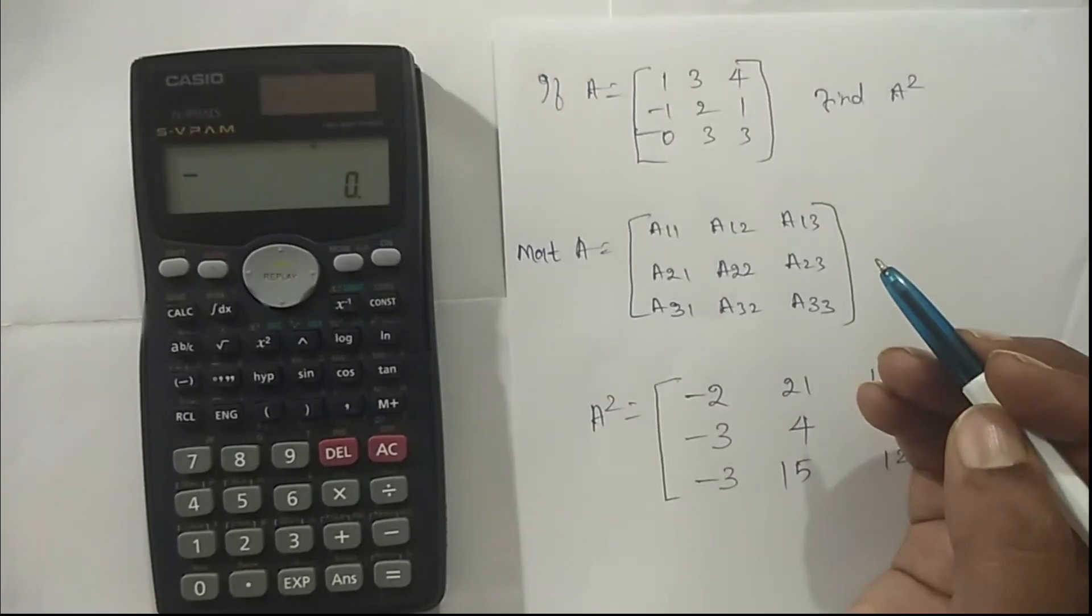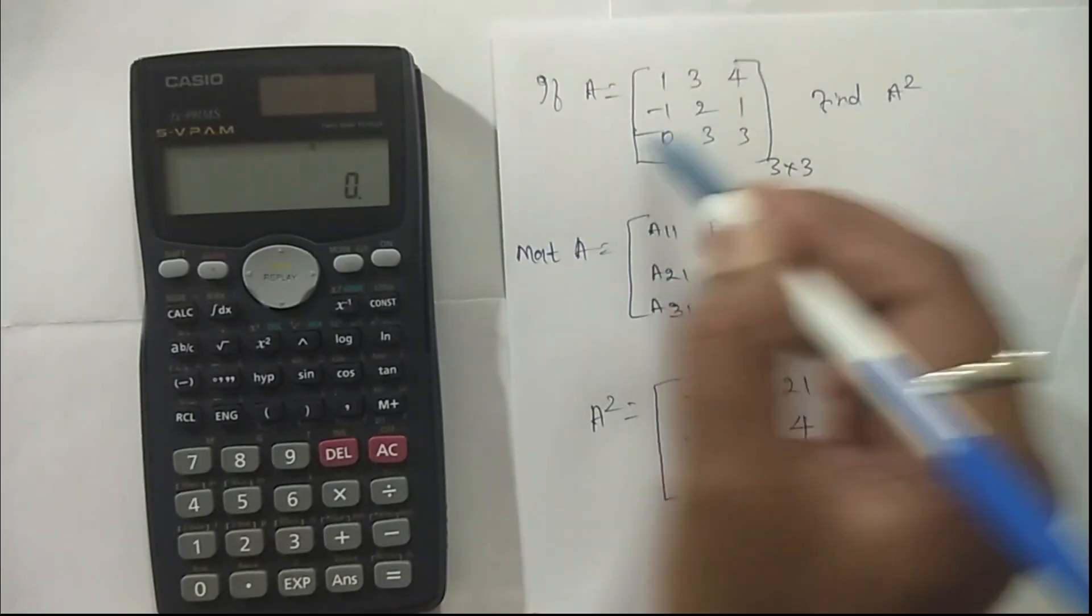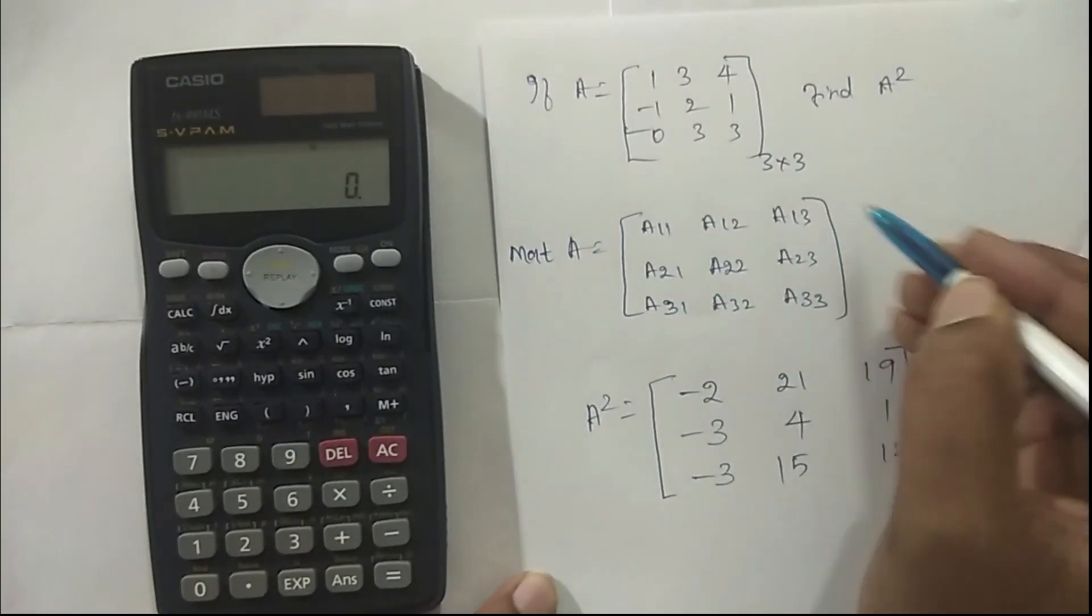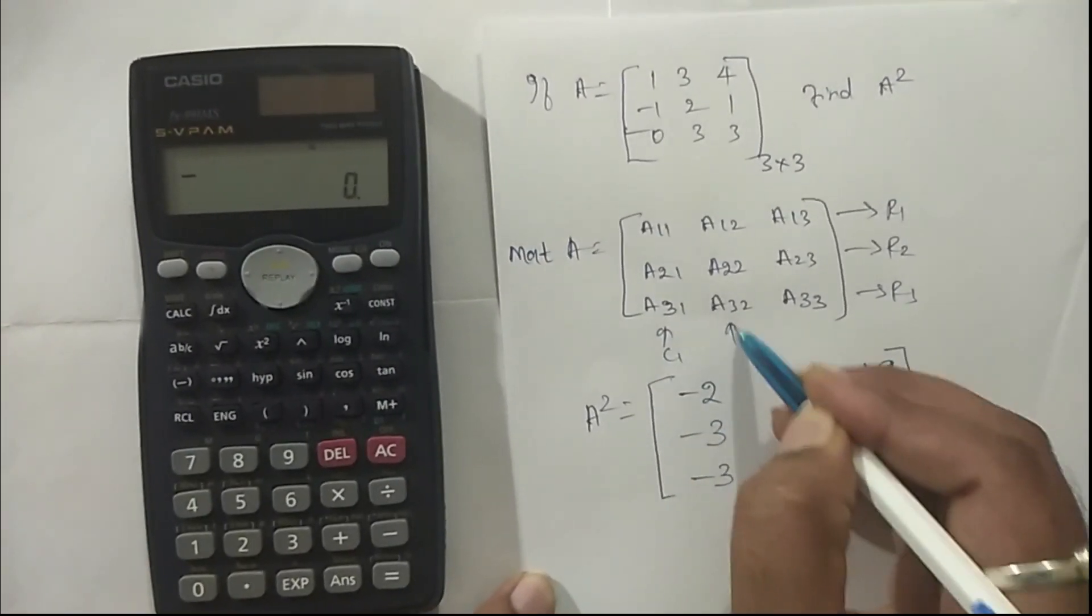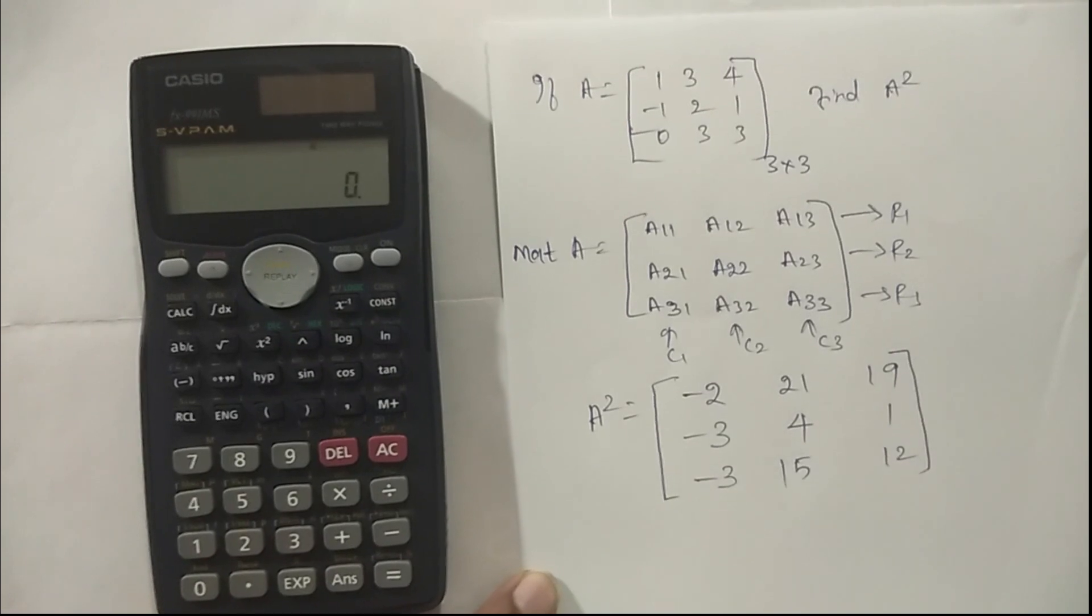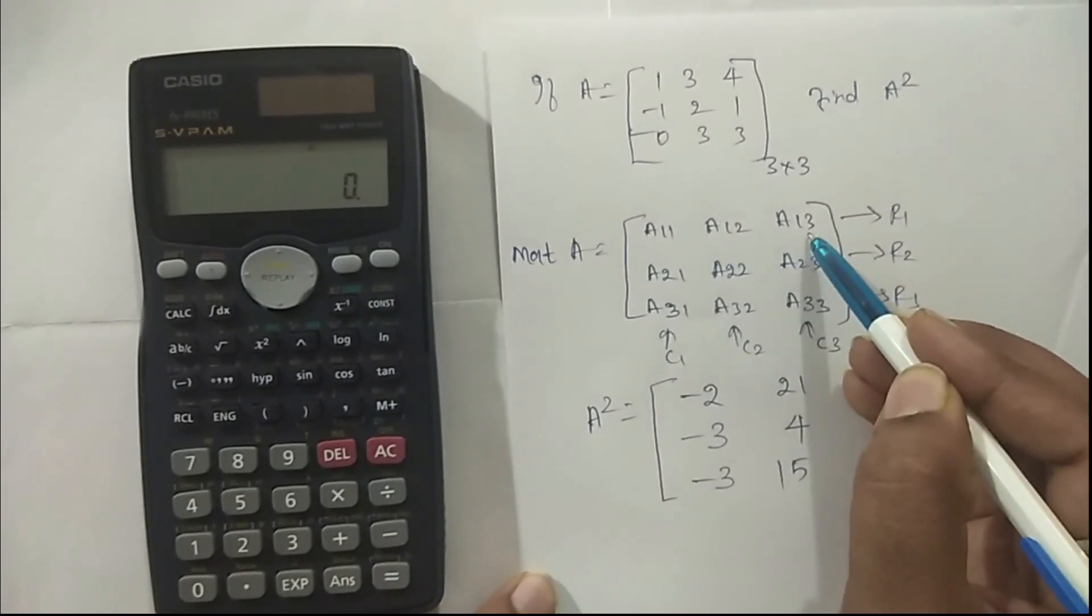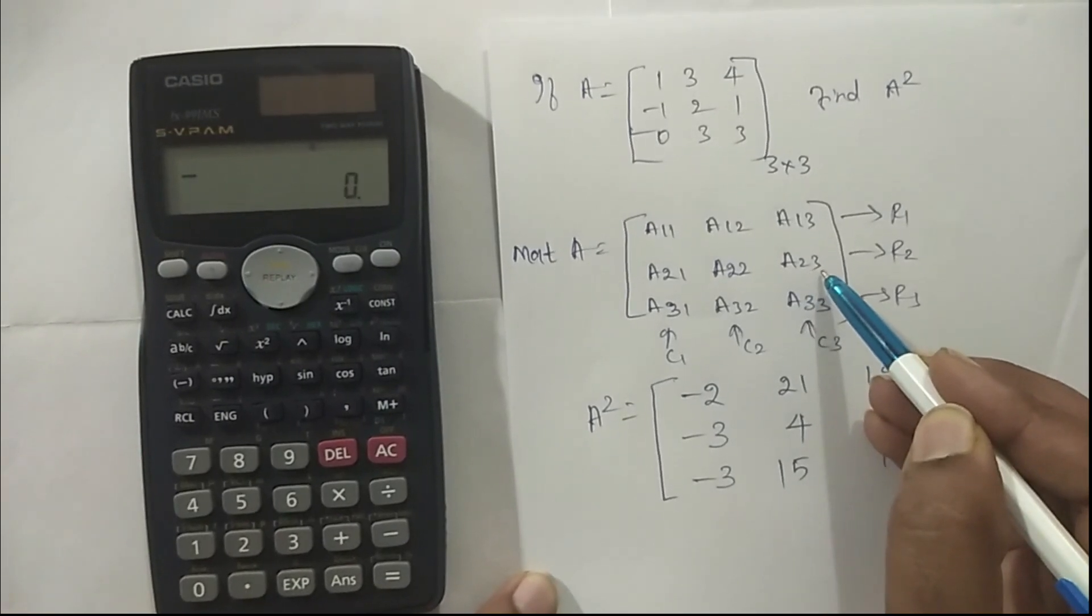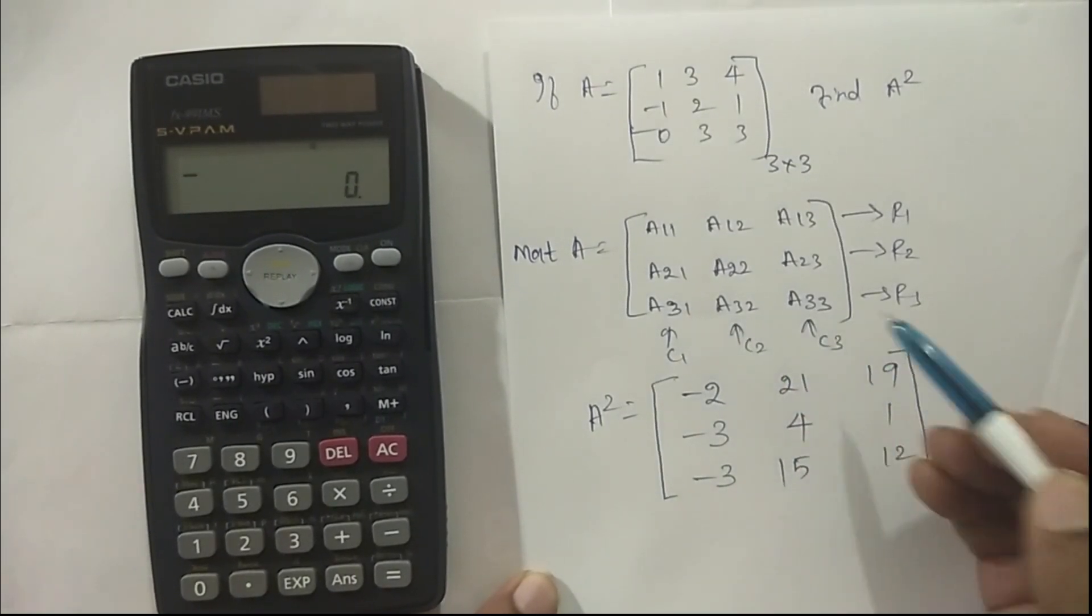For that, take an example. I've taken a matrix A of 3x3 order, so three rows and three columns. Each column element is named accordingly. This is row one, row two, and row three. Similarly, this is column one, column two, and column three. So second row column one element, second row column two element, second row column three element. Similarly A31 is third row column one element, third row column two element, and third row column three element.